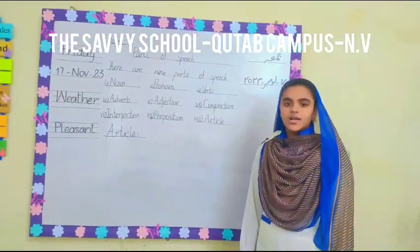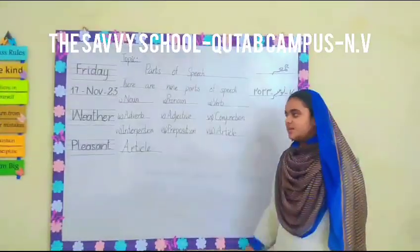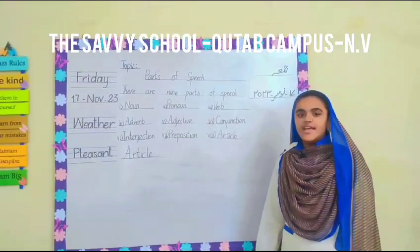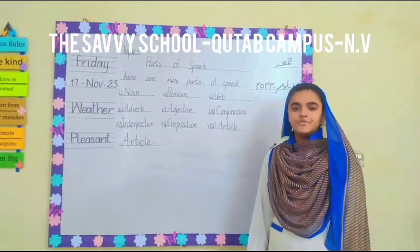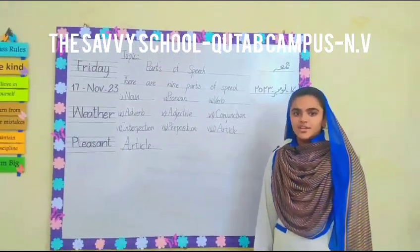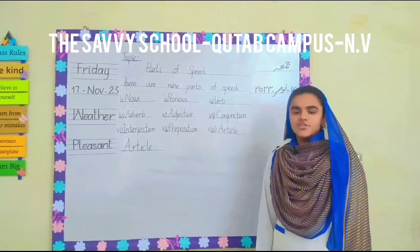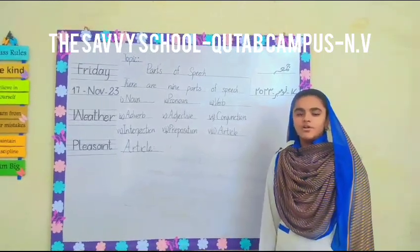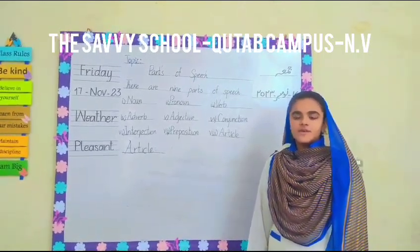Article. There are two articles: 'a' and 'the'. An article is a word that modifies a noun by indicating whether it is general or specific.